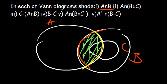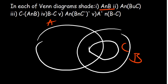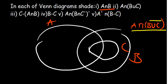Moving to the next question, it requires us to shade A intersection (B union C). How do we shade that? We need to look at what's in the brackets first. We have A intersected with (B union C). So let's start by shading B union C — it requires us to combine B with C completely, not just their intersection but the entire region of B combined with C.